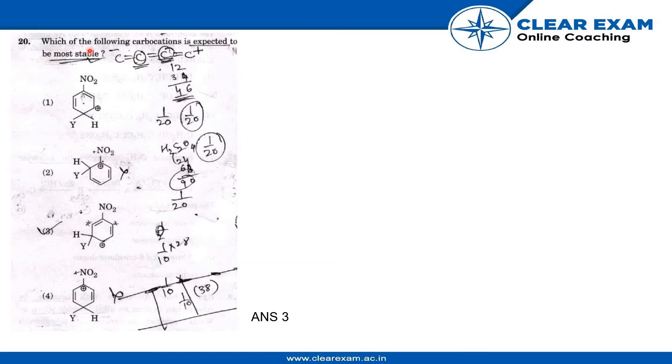The question is which of the following carbocations is expected to be the most stable. The NO2 compound is attached to this compound. The NO2 group is an electron withdrawing group and it also exhibits minus I effect.